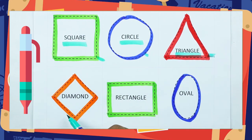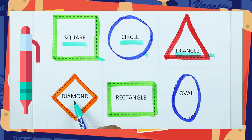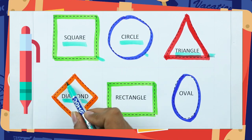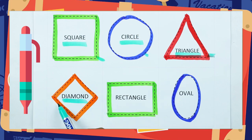Which shape is this? Diamond. D-I-A-M-O-N-D. It's a diamond, with orange color.